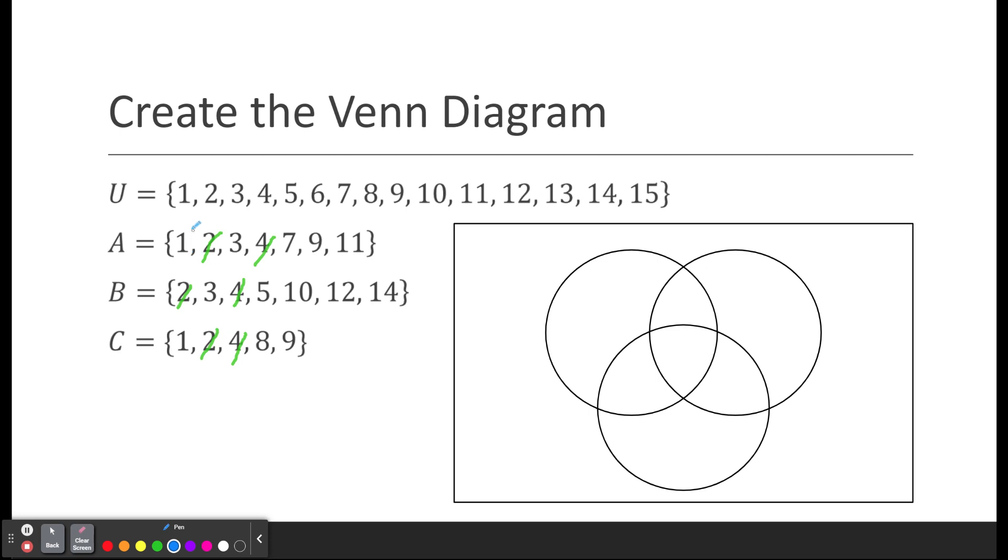Then what's in A and C? Well, I've got a 1 in A and C, and I've got a 9 in A and C. Then I look and see what's in A and B. Well, A and B are going to have a 3, and that'll be it. And then what's in B and C? I don't think there's any overlap in B and C.